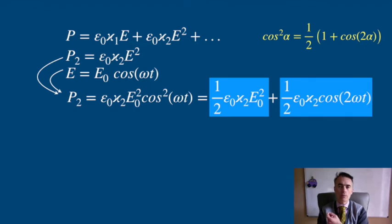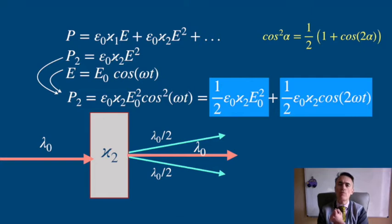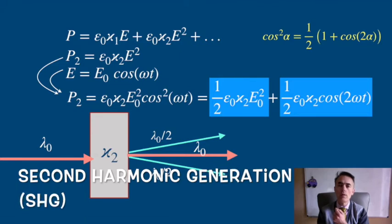This polarization that oscillates is going to generate electromagnetic wave of twice the frequency of the incoming wave. So we can generate photons of half the wavelength of the incoming photons. This we call the second harmonic generation.